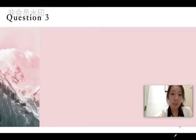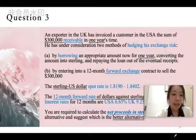Hello, Professor and Liu Yue. For question 3, an exporter in the UK has invoiced a customer in the USA the sum of $300,000 receivable in one year's time. He has under consideration two methods of hedging his exchange risk.